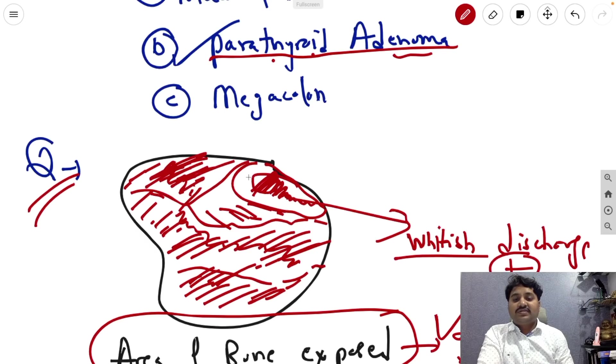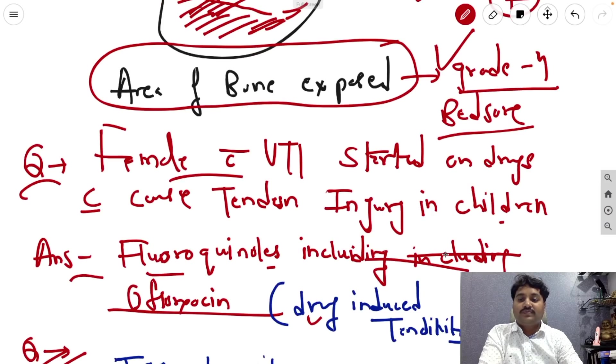Next question, you will see some whitish sort of discharge in this area, the area of the bone exposed we show some whitish discharge. That is the great poor bad sore. Now female with UTI started on drugs which causes tendon injury in children.